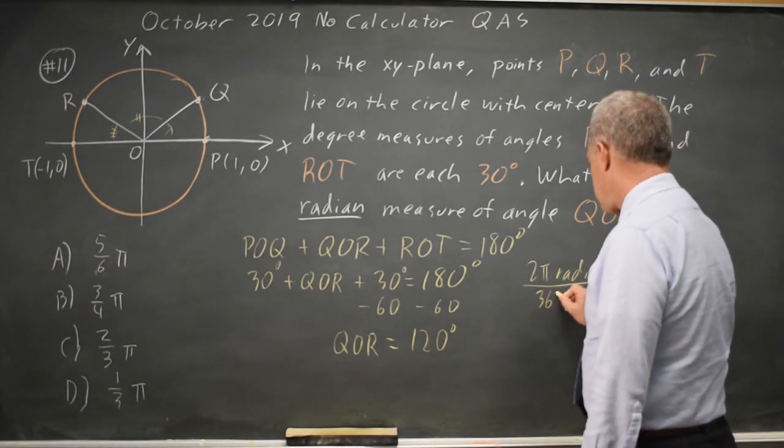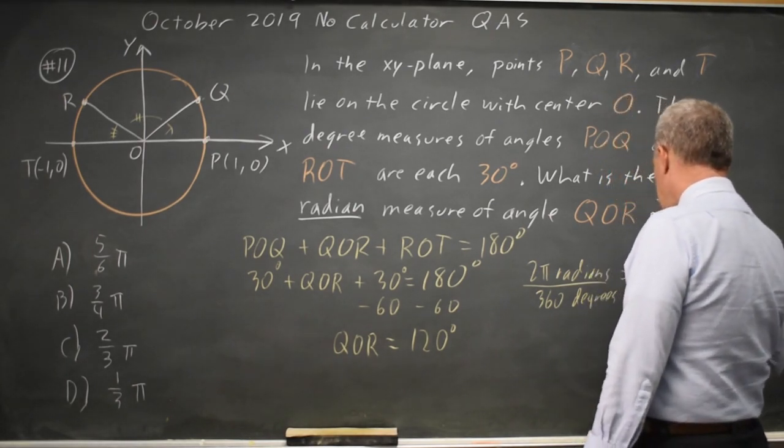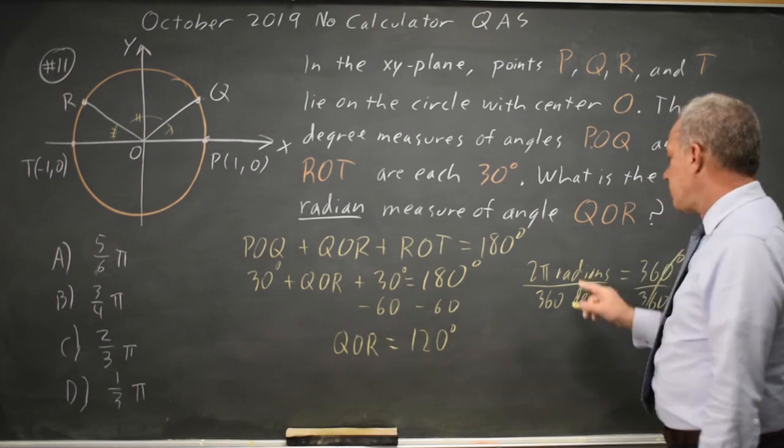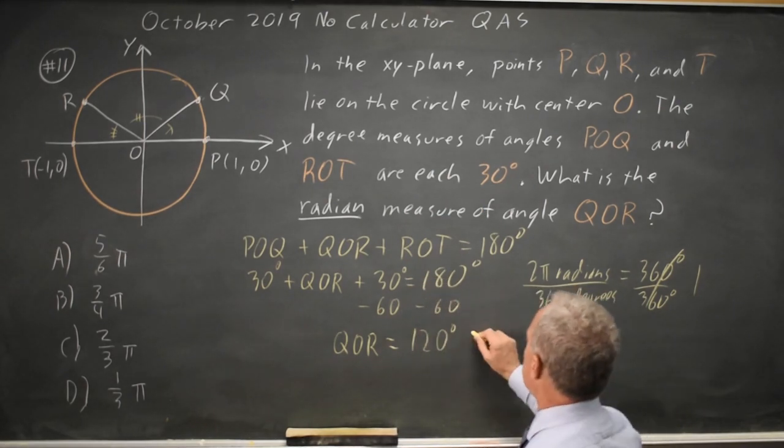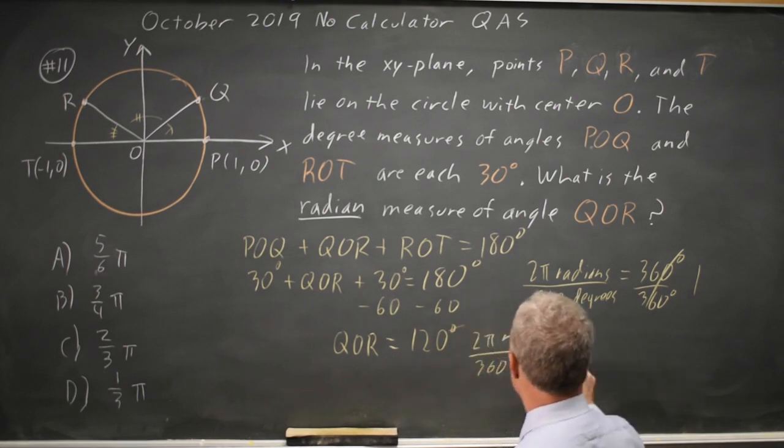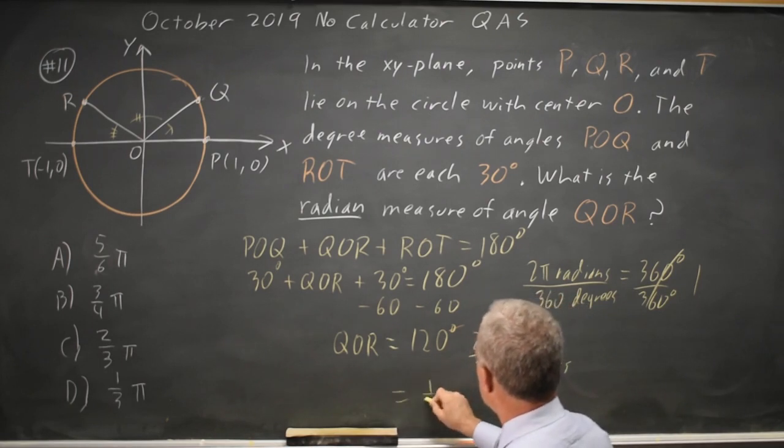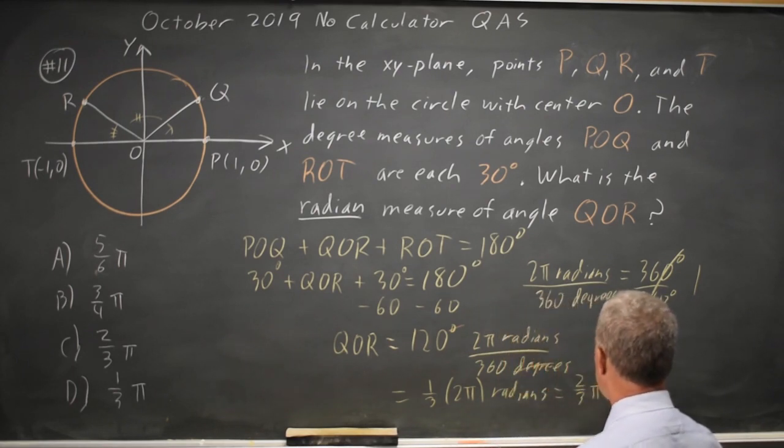you get 2 pi radians over 360 degrees equals 1. So if I multiply this by 2 pi radians over 360 degrees, the degrees will cancel. And I'm left with 120 over 360 is 1 third times 2 pi radians equals 2 thirds pi radians.